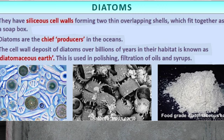Due to the indestructible nature of silica, these deposits accumulate over billions of years in the diatom's habitat. This enormous accumulation of silica forms a special structure referred to as diatomaceous earth. A very commonly asked question is: what is diatomaceous earth? It is the accumulated silica cell walls of diatoms that pile up over millions of years, forming a porous, plate-like rock structure.